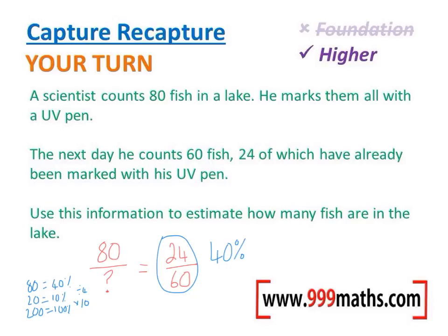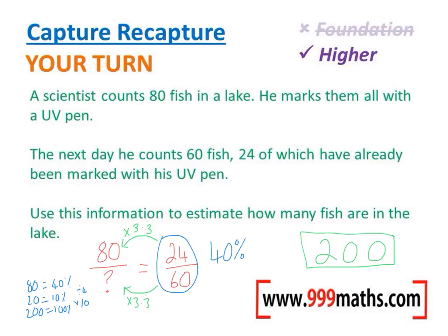The other way to have done it would be to make these fractions equivalent. We need to know what we've multiplied the 24 by to get 80 — whatever that is, we then multiply the bottom by the same. To work out what we multiply 24 by to get 80, we do 80 divided by 24, which is 3.3 recurring. So we also multiply the bottom, 60, by 3.3 recurring, and 60 multiplied by 3.3 recurring is also 200. And that's the end of the question.